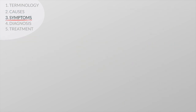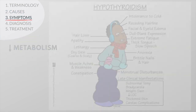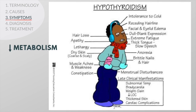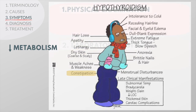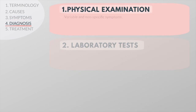When thyroid hormone levels are too low, the cells in our body can't get enough thyroid hormone, and the body's processes start slowing down. As the body slows, you may notice that you feel colder, you tire more easily, your skin is getting drier, you're becoming forgetful and depressed, and you've started getting constipated. Because these symptoms are so variable and non-specific, the only way to know for sure whether your patient has hypothyroidism is with a simple blood test for T4 and TSH.